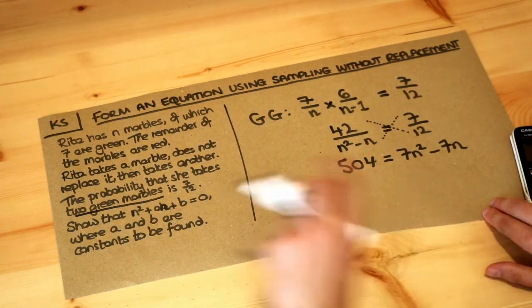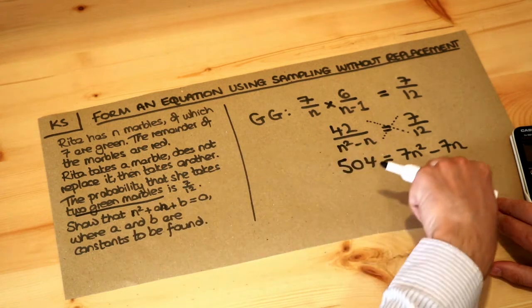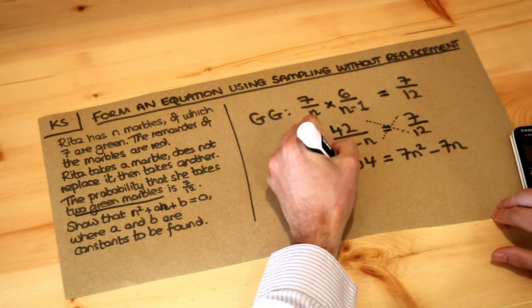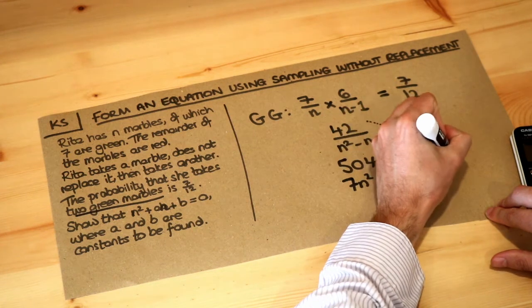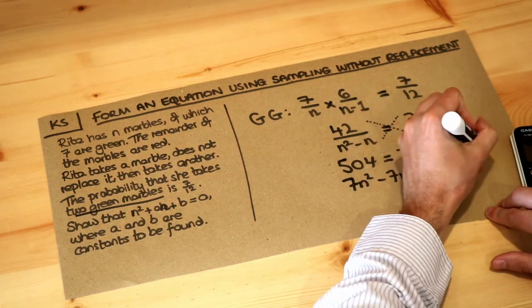And then we can put it all on one side. We want the n squared term to be first, so let's put it all on the right-hand side. We'll just subtract the 504, so 7n squared minus 7n minus 504, and that will now be 0 because we've subtracted 504.